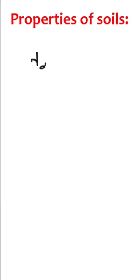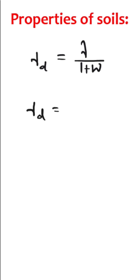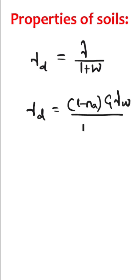Next, coming to the other basic relationship: dry unit weight of soil is given by gamma_d = gamma / (1 + w), and also gamma_d = (1 - Na) * G * gamma_w / (1 + G*e). Here, G is the specific gravity of soil solids, gamma_w is the unit weight of water, Na is the percentage air voids, gamma_d is the dry unit weight, and w is the water content of soil.